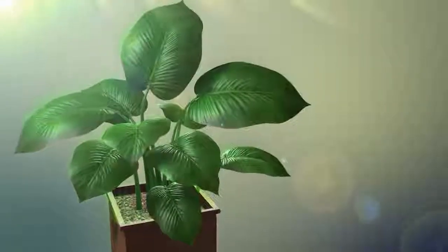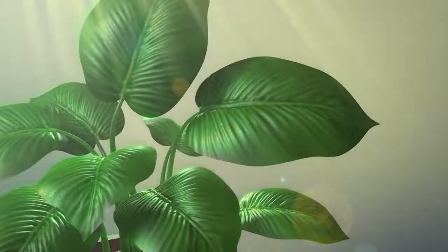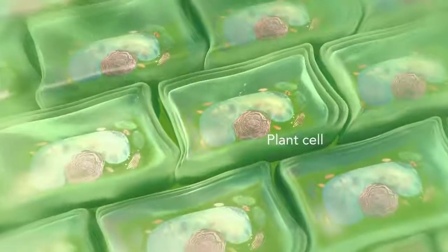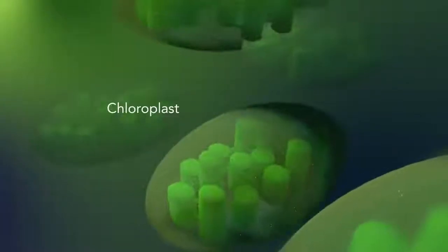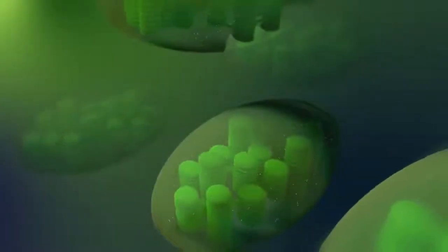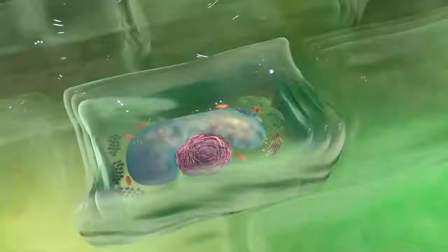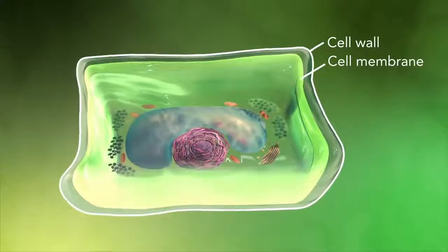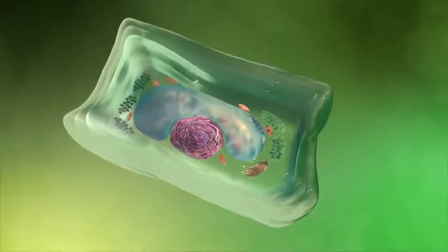Some organisms, such as plants that are photo-autotrophic — meaning they capture sunlight for energy — have cells with an organelle called a chloroplast. The chloroplast is where photosynthesis happens. It's green because it has a green pigment called chlorophyll. Plant cells also have a cell wall outside of their cell membranes that shapes, supports, and protects the plant cell. Animal cells never have a cell wall.